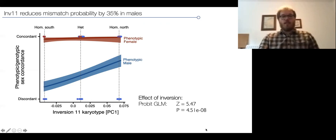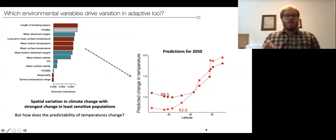However, we don't know the mechanism yet. Overall, there seems to be the inversion has a strong effect and interacts with the sex determining locus, potentially, by unknown mechanisms.